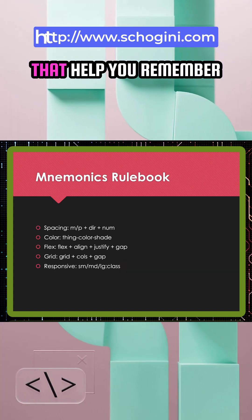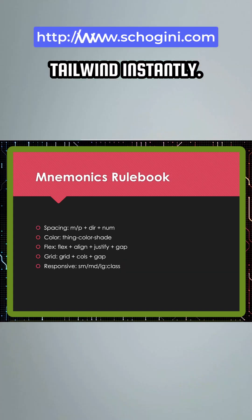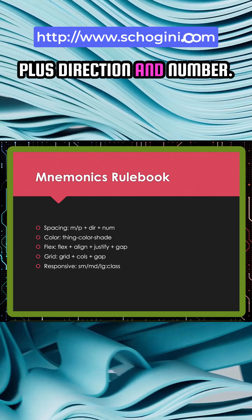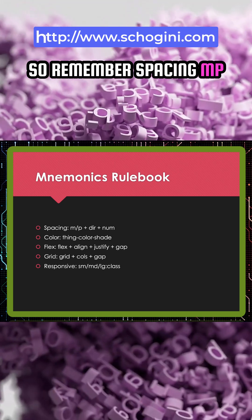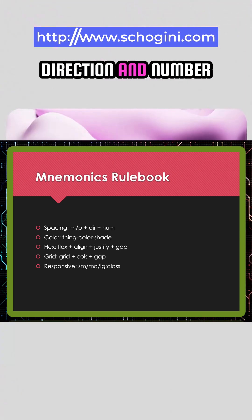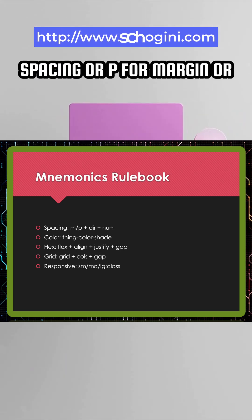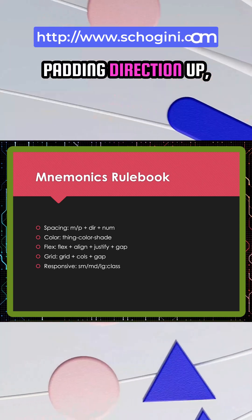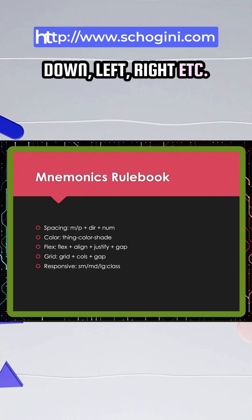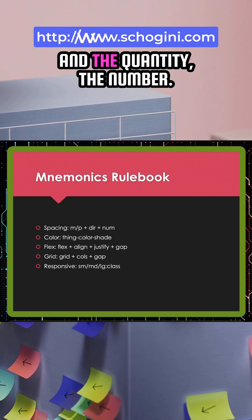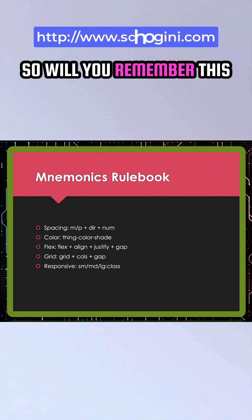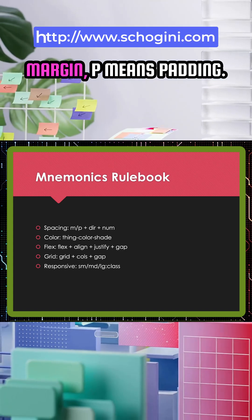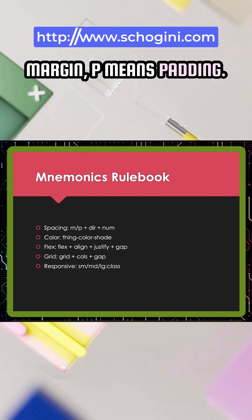These are the formulas that help you remember Tailwind instantly. Spacing equals m or p, plus direction, plus number. So remember: spacing uses m for margin or p for padding, a direction — up, down, left, right, etc. — and a number for the quantity. m-hyphen means margin, p-hyphen means padding.